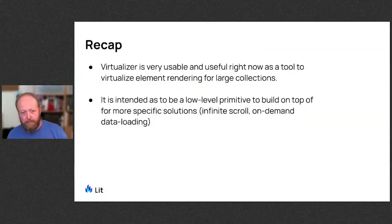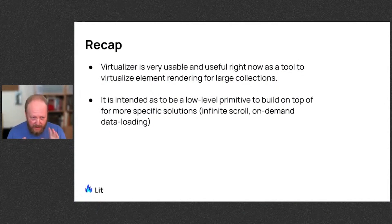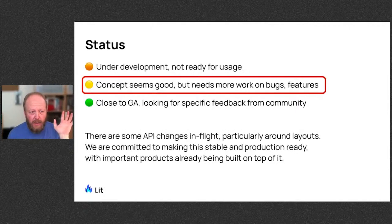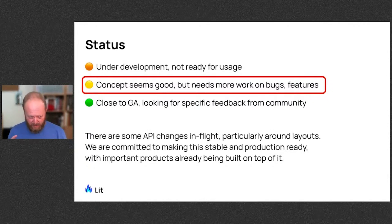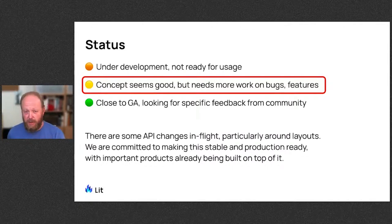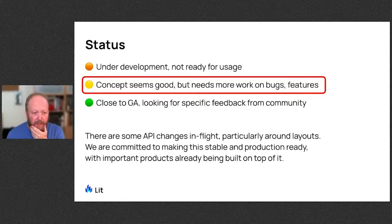To recap: Virtualizer is very usable and useful right now as a tool to virtualize element rendering. It is intended to be a low-level primitive, so you can build elements and behaviors on top of it to do your news feed, infinite scrolling, and whatever comes to mind. We're still working to get full test coverage — this is a component with a lot of performance impacts, so we're stress testing it and measuring edge cases. Bugs still come in, but it is very usable right now, and we'd love to get more feedback on your use cases so we can make better decisions as we stabilize the API.